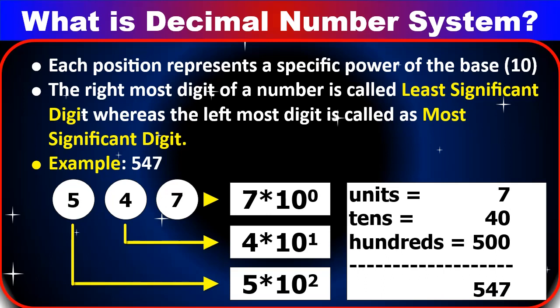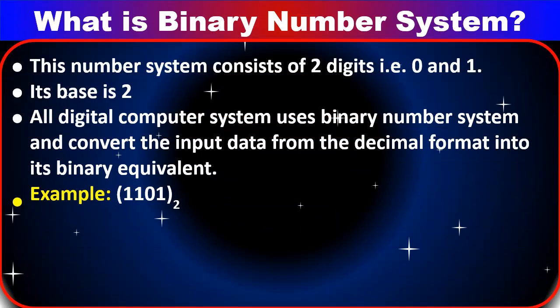Here, units, tens, and hundreds are the place values. Next, what is the binary number system? This number system consists of 2 digits, that is 0 and 1, and the base of the binary number system is 2. All digital computer systems use the binary number system and convert input data from the decimal format into its binary equivalent. One example of a binary number is 1101 — any number in binary must contain only 0 or 1, nothing more than that.